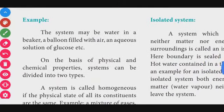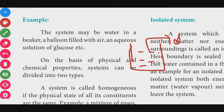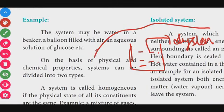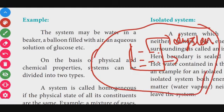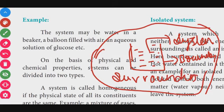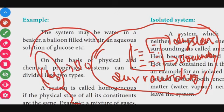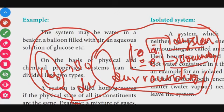For example, the system may be water in a beaker. The water in the beaker is your system, the glass is your boundary, and everything else is the surrounding — so we have system, boundary, and surroundings. Another example: a balloon filled with air — the air inside is the system, the balloon surface is the boundary, and the rest is the surroundings.